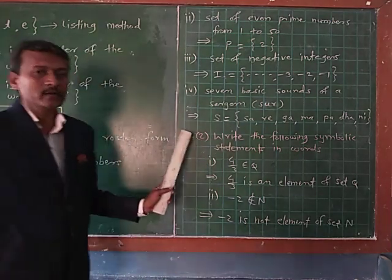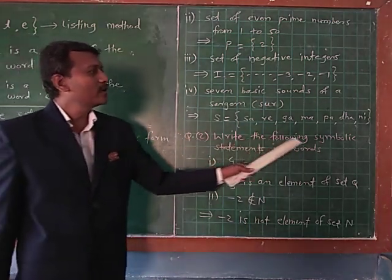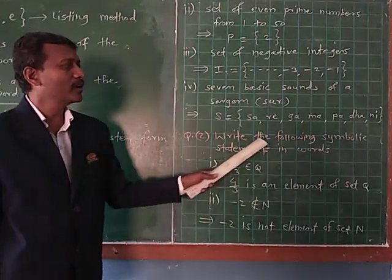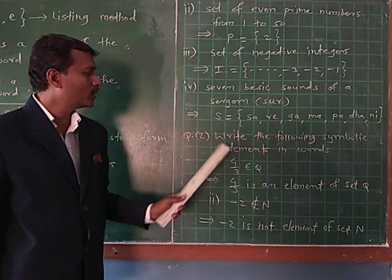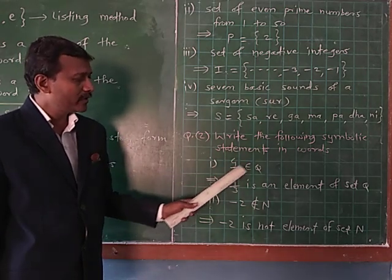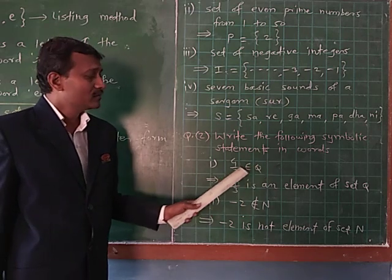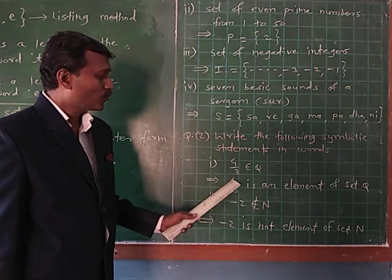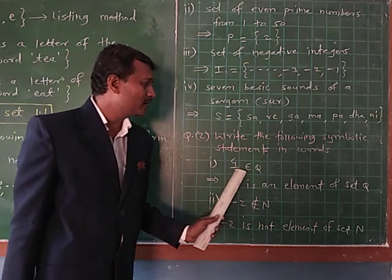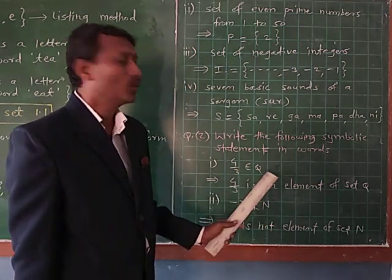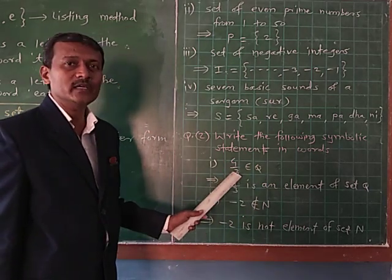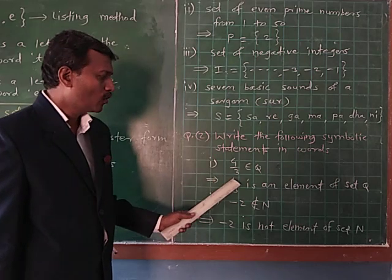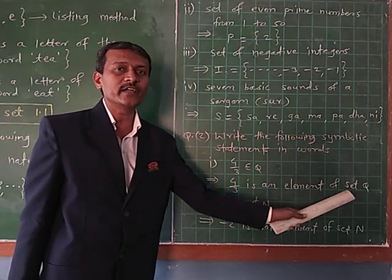Question number 2: Write the following symbolic statements in words. First example: 4/3 ∈ Q. Write in the verbal statement. The answer is: 4/3 is an element of set Q. The name of the set is Q, and 4/3 is its member or element or object. Therefore, 4/3 is an element of set Q.